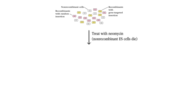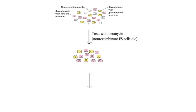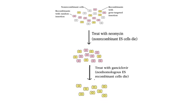We treat the cells with neomycin, which kills the non-recombinant embryonic stem cells, leaving two cell types. We then treat the remaining cells with ganciclovir, a nucleotide analog, which kills the non-homologous recombinant embryonic stem cells. The surviving cells are the desired homologous embryonic stem cell recombinants with targeted disruption in gene X.